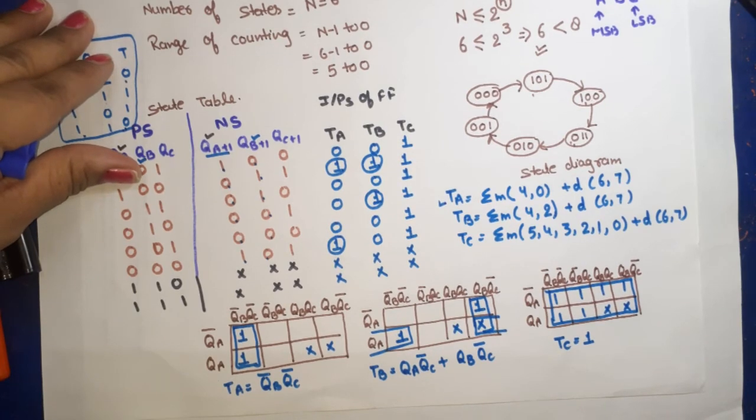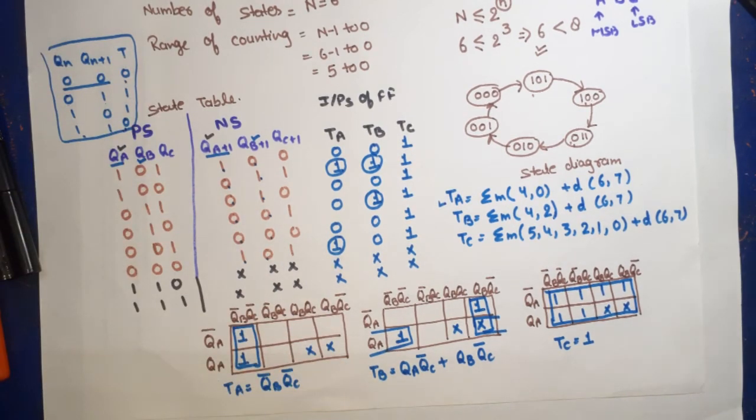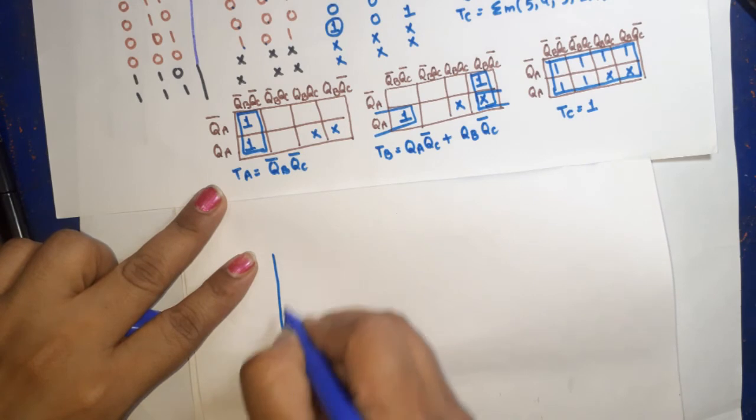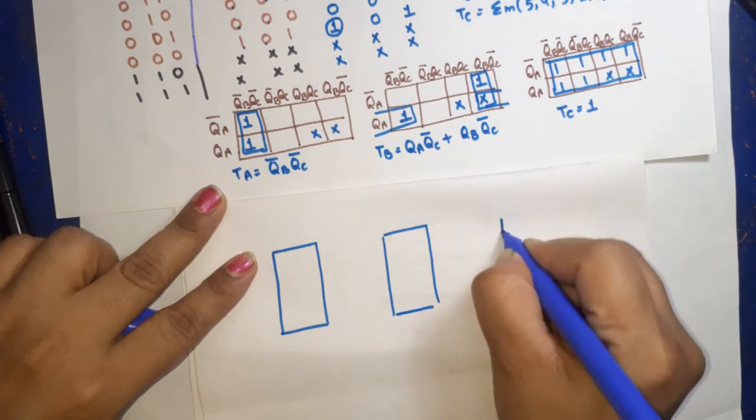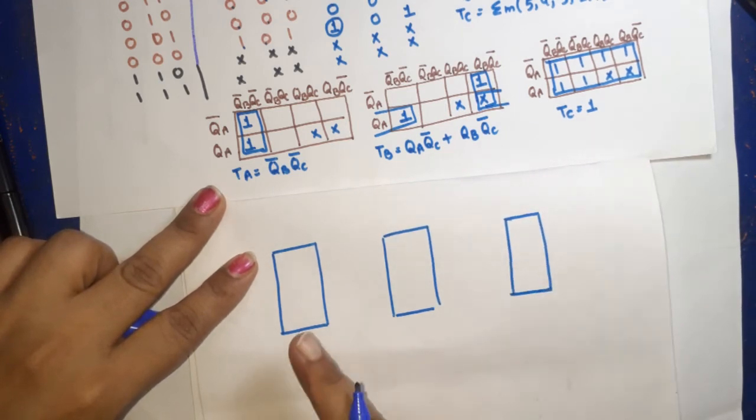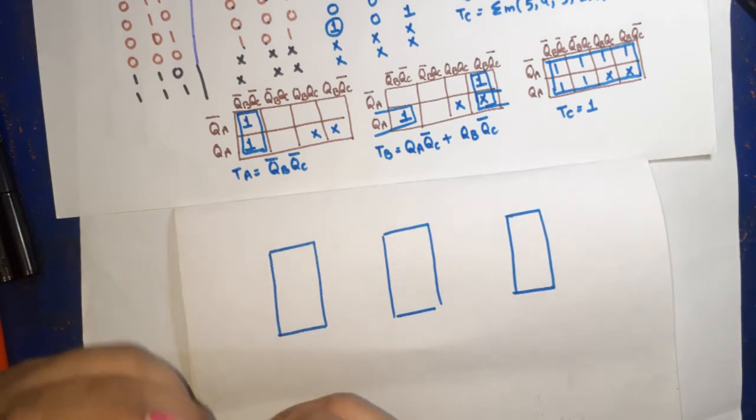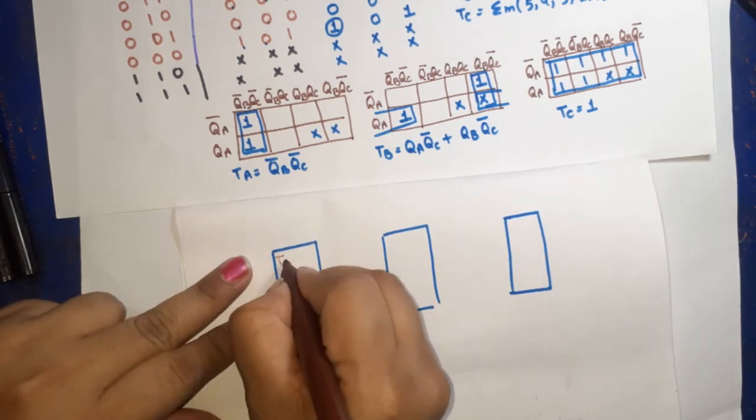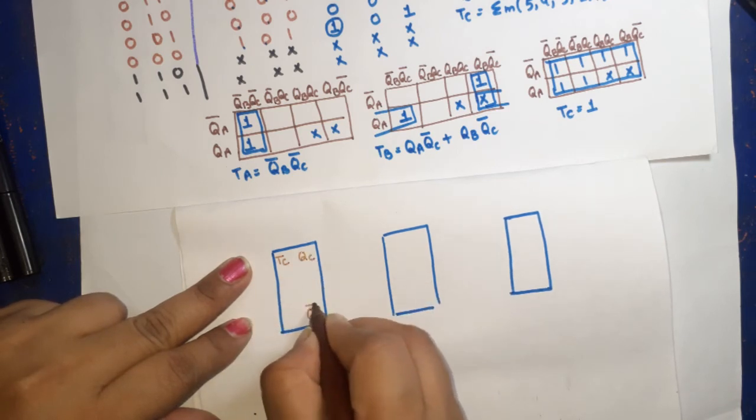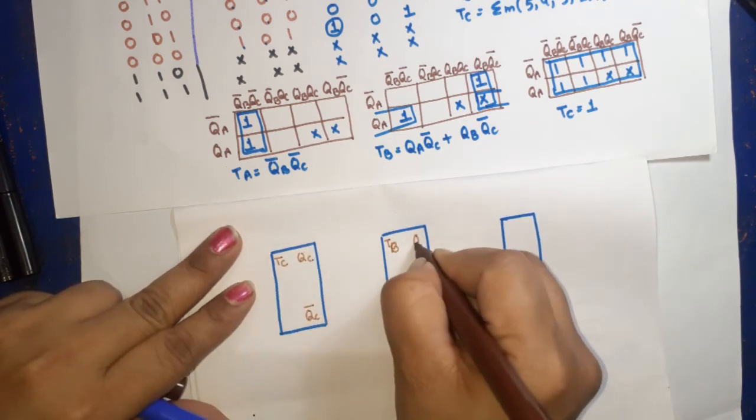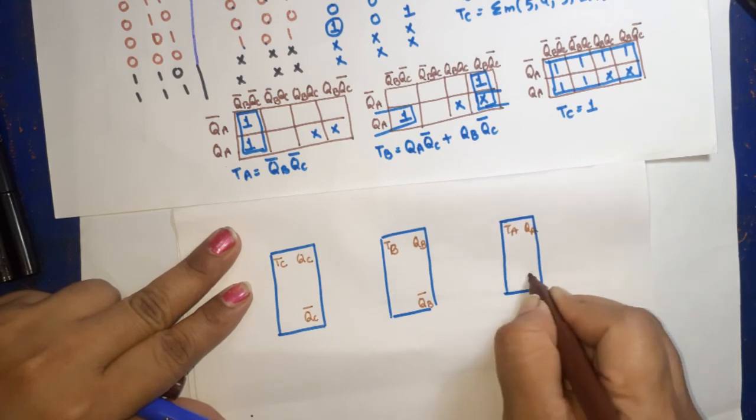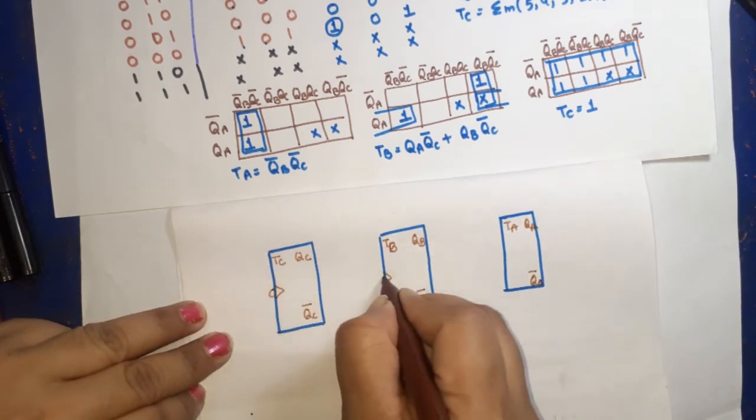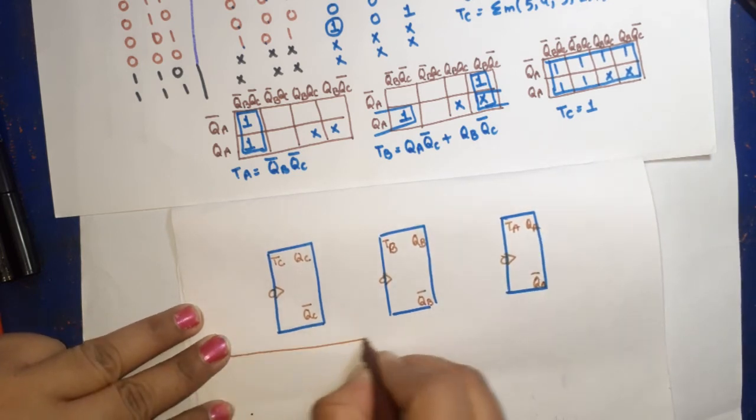Now I have to draw the diagram. According to this, we need three flip-flops. First I've taken 3 flip-flops: first, second, and third. This is LSB and this is MSB. If this is LSB, this is C, so here is TC, corresponding QC, QC bar. Here is TB, here QB, QB bar. This is TA, this is QA, this is QA bar. These are synchronous counters, means clock will apply to all, so I have connected common clock to all.